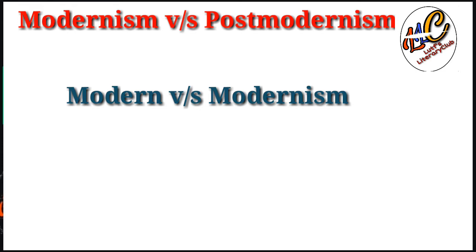Linguistic perspective se dekhen to English language ki history mein bhi different periods hain: Old English, Middle English, aur Modern English. Modern English 1400 se shuru hoi, jiske baais Chaucer ko 'father of modern English' kaha jata hai kyunke usne jo language likhi woh medieval English se drift hokar modern English ki taraf aayi. Is tarah 'modern' ki ek historic meaning hai ke har generation apne contemporary period ko modern kehti hai.